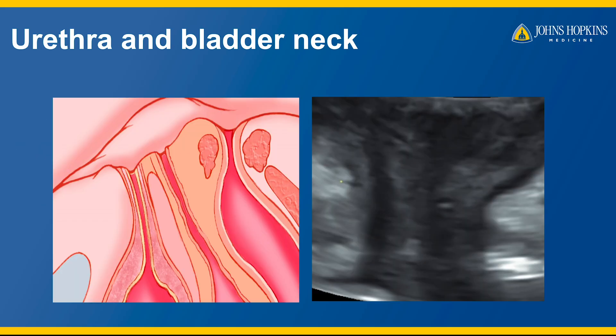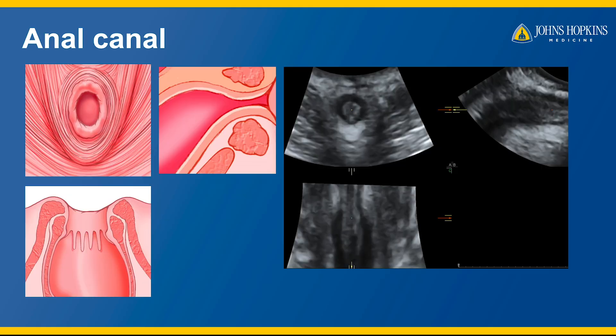Some of the anatomy of interest includes the urethra and bladder neck, shown here in the sagittal plane, and the anal canal, shown here in the axial plane.